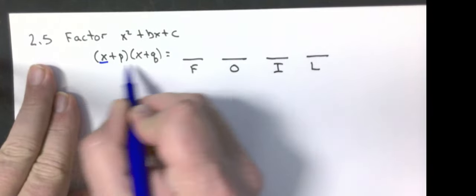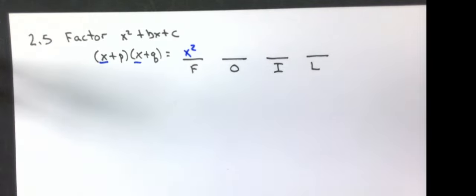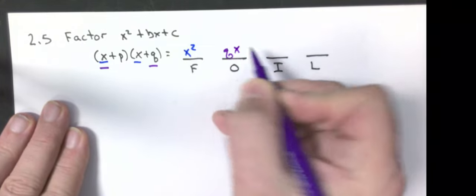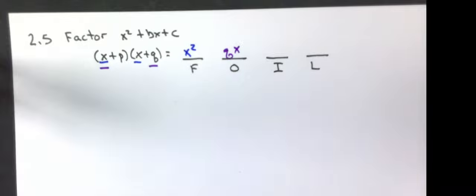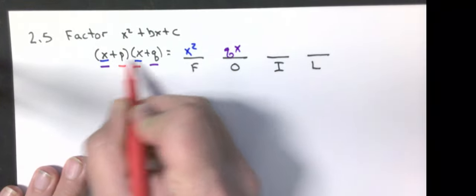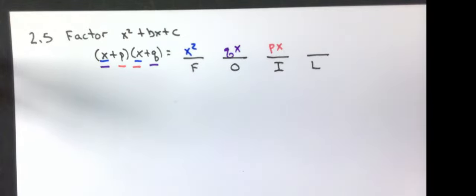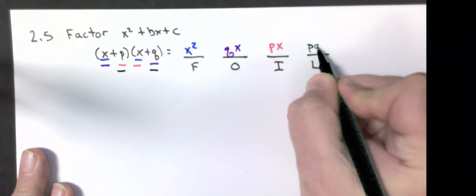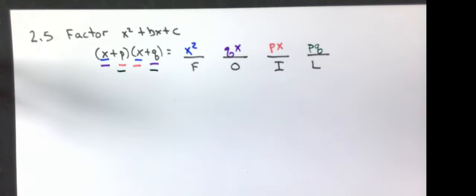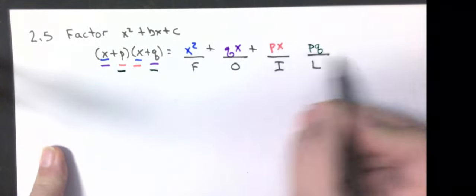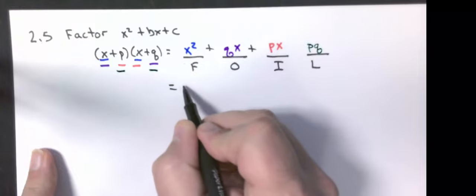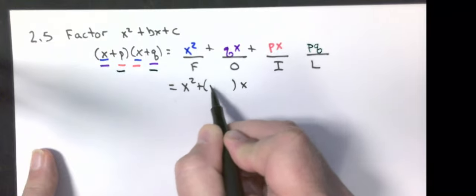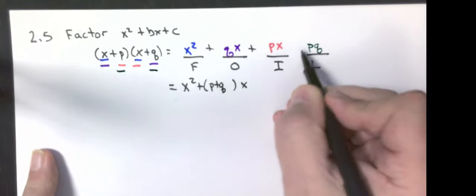First times first: x times x is x squared. Outer would be x times q — I'm going to write this as qx. Inner is p times x, which is px. And then my last is p times q. All of these have plus signs between them. So the final answer would be x squared, and both of these have x's, so that would be (p plus q)x, then plus pq.